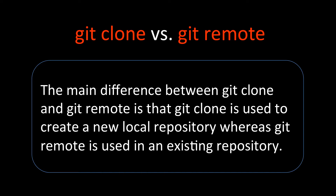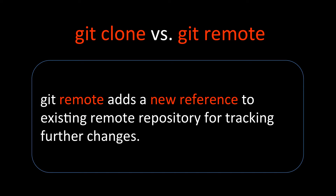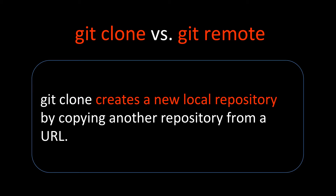Git remote is only for an existing repository. When you do git remote, it will add a new reference to the existing remote repository so that we can track further changes. But if you do git clone, we create a new local repository and you can start working on it, because the local repository will be the copy of the remote repository from which we are cloning.